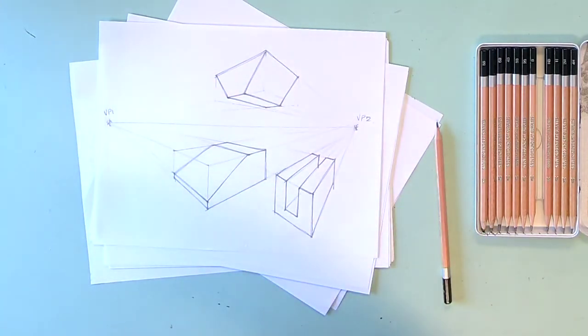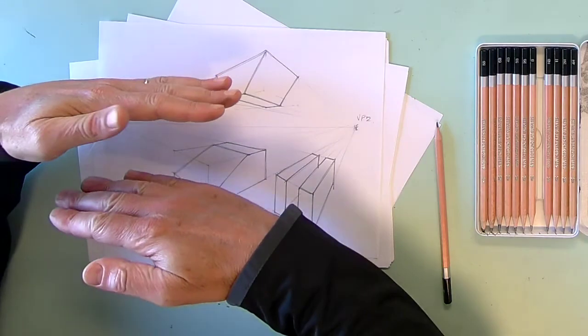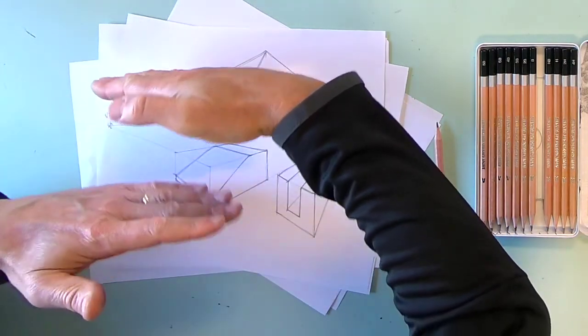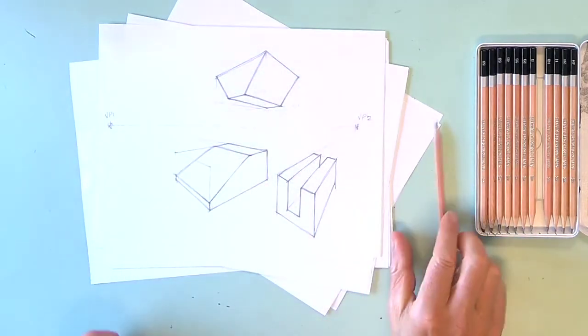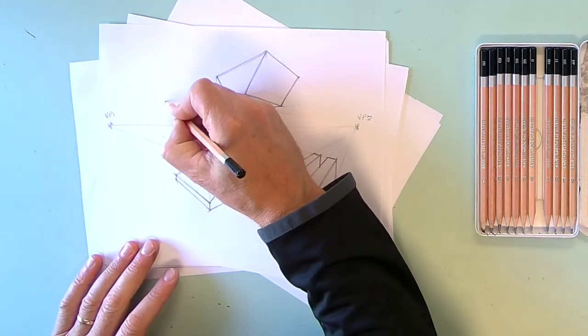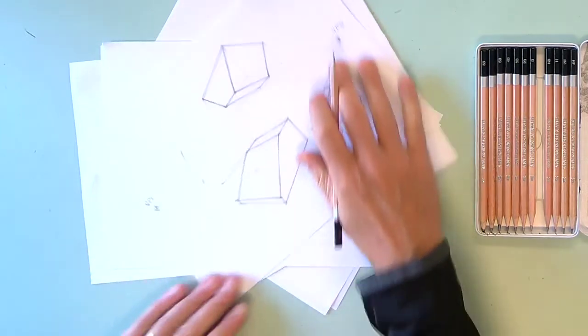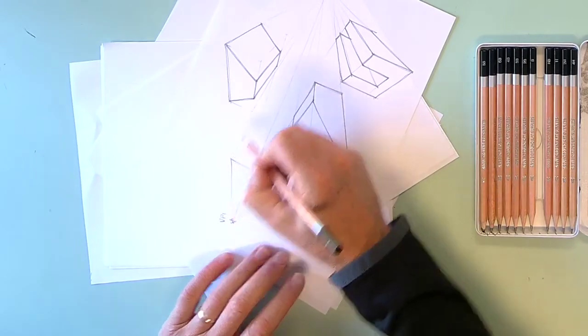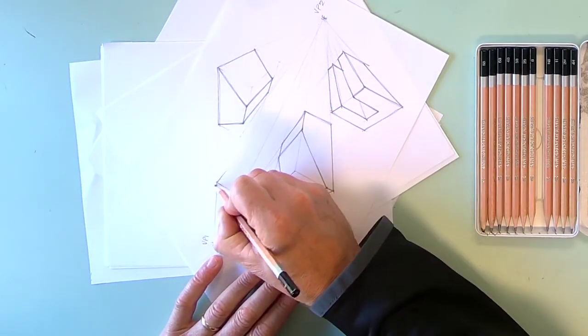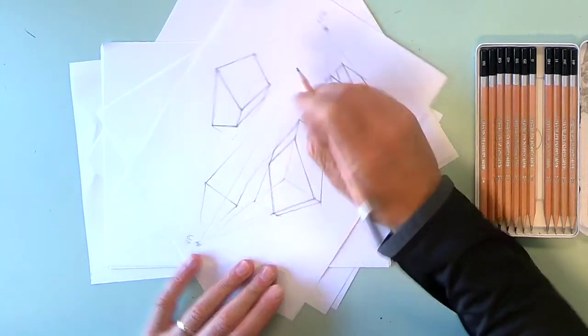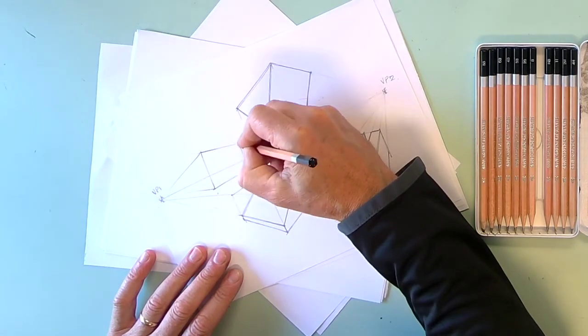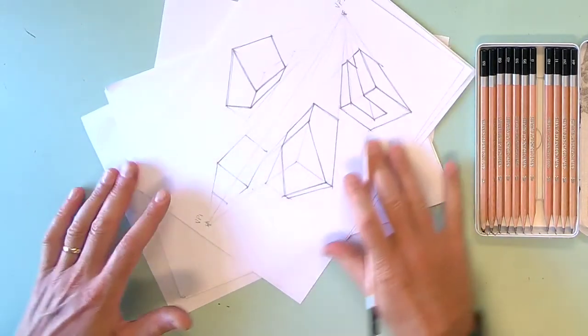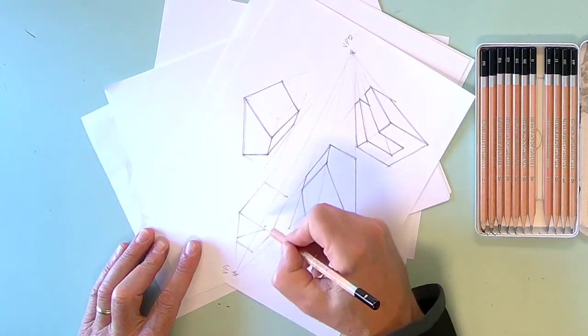The only thing with that is that you're only going to see the two front faces of your box. You're not going to see the top and you're not going to see the bottom of the box. So if I do this here, it's going to go to VP1, VP1, VP2, VP2. I'm going to create the box, back of the box, and then I could look at doing a slope on it or something like that.